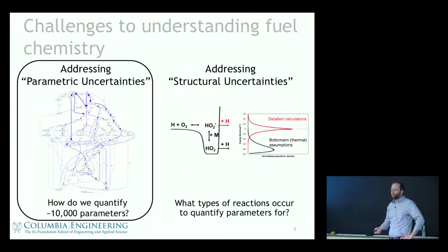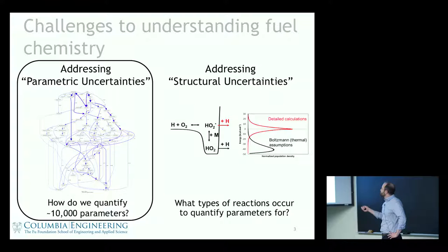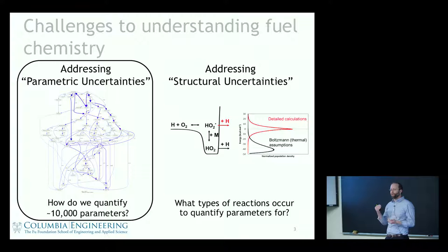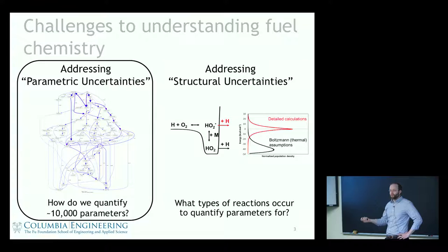Combustion reactions don't just happen in a single step — they occur in a whole sequence of intermediate steps. You start with fuel and air, with fuel being already a multi-component mixture. In between, you end up with tens of thousands of intermediate species before you reach your final products, which are mostly CO2 and water.